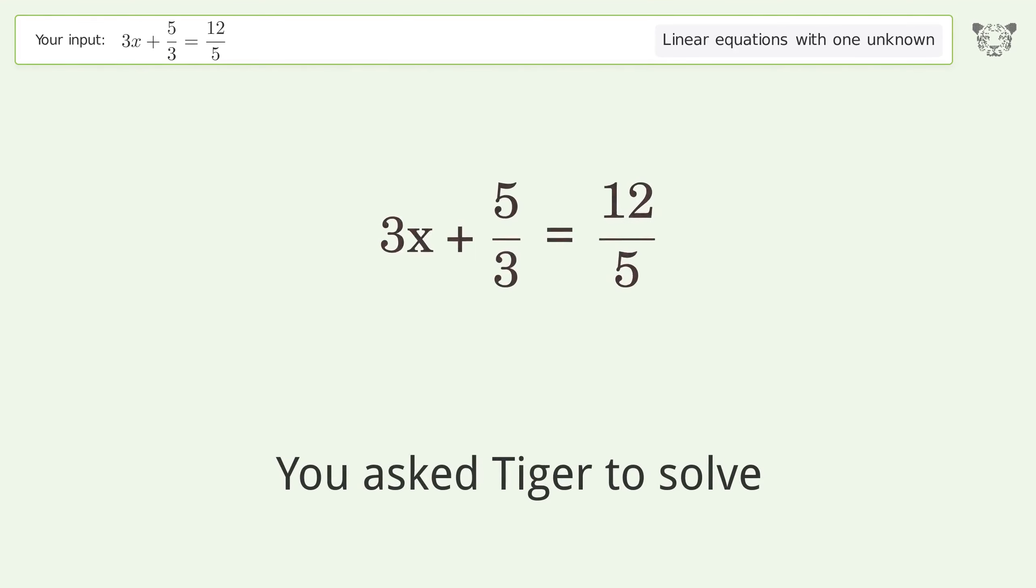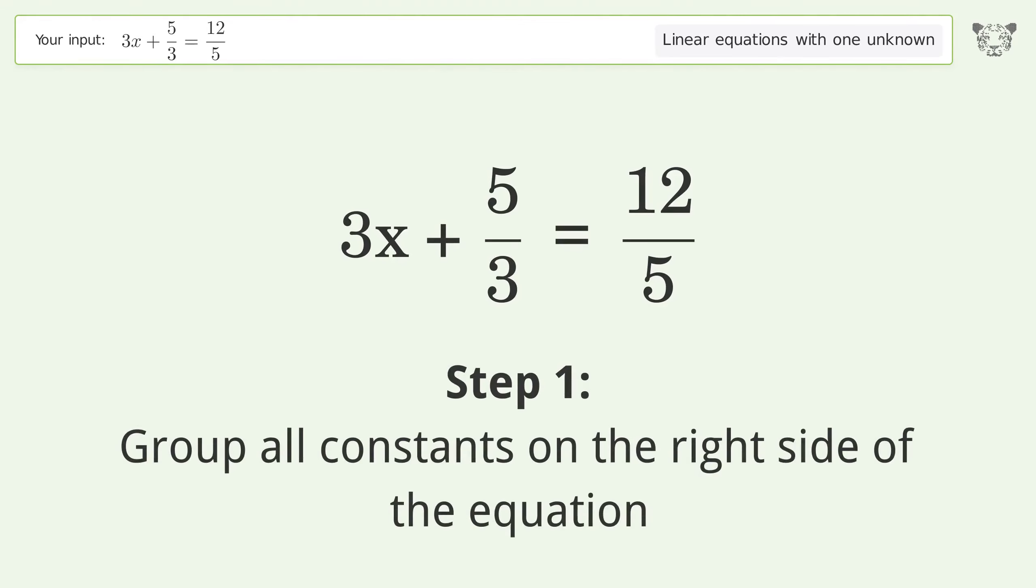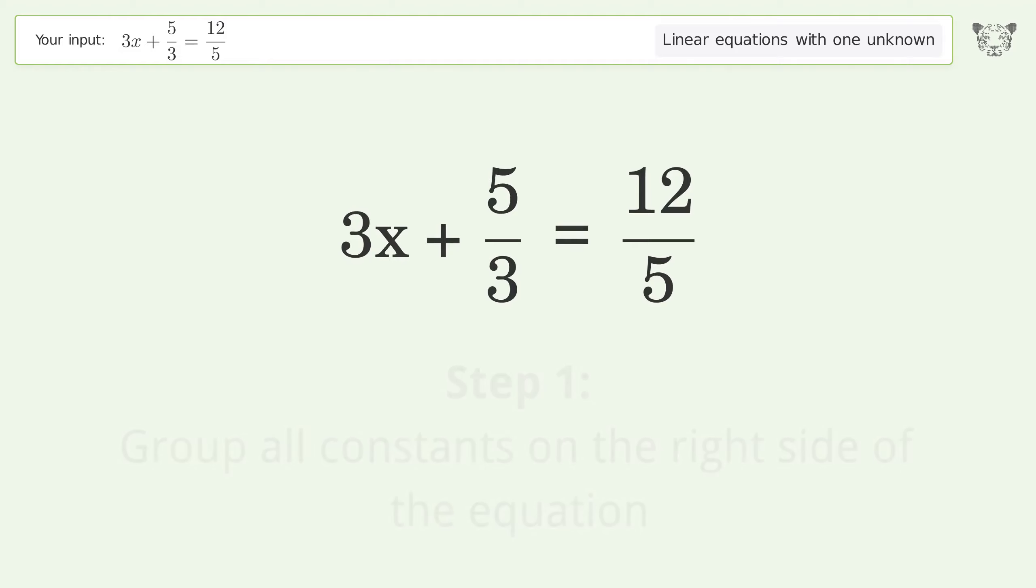You asked to solve this linear equation with one unknown. The final result is x equals 11 over 45. Let's solve it step by step. Group all constants on the right side of the equation. Subtract 5 over 3 from both sides.